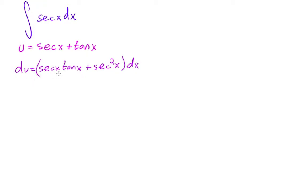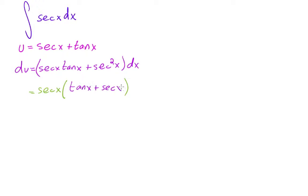If you take a look at this expression, what algebra things can you do? You can factor out a secant. So if I factor out a secant, what will I have left over inside? Tangent plus secant — which is equal to u.